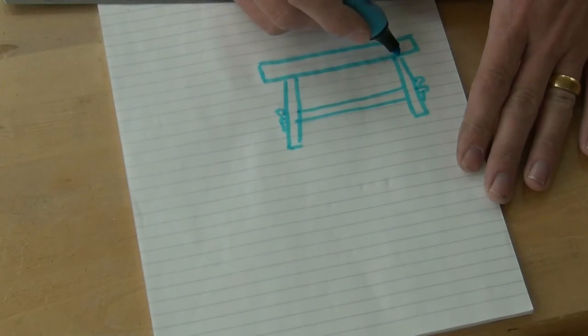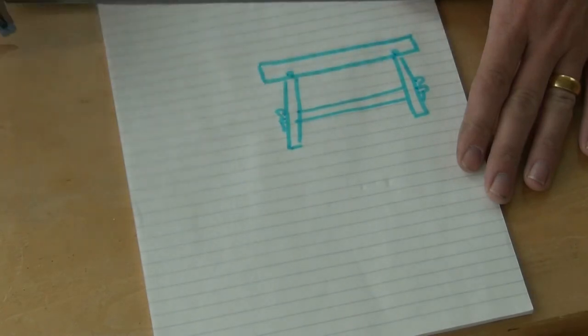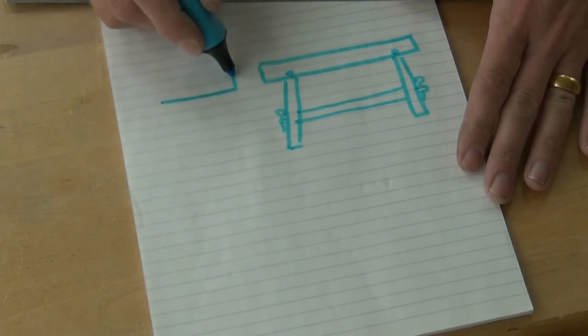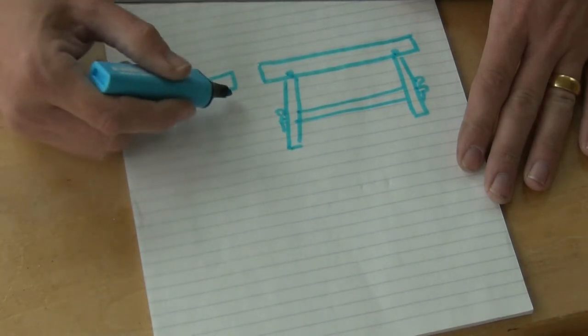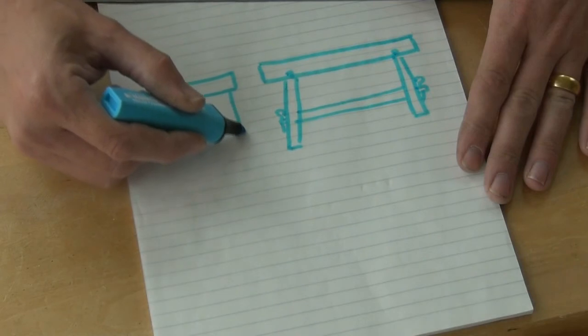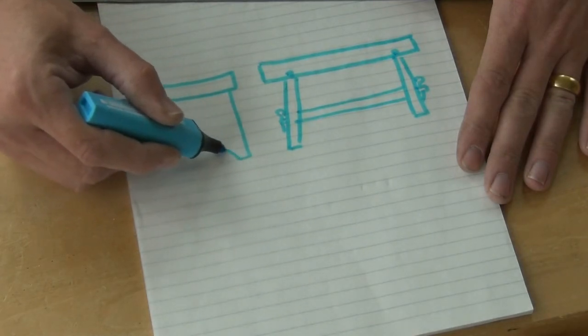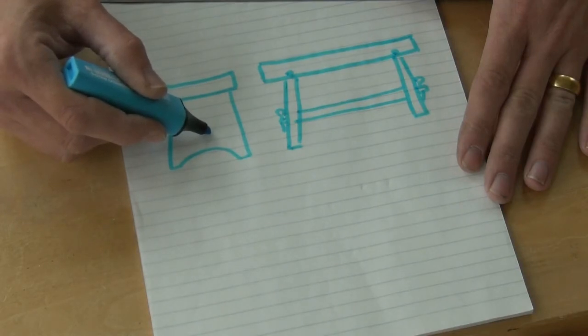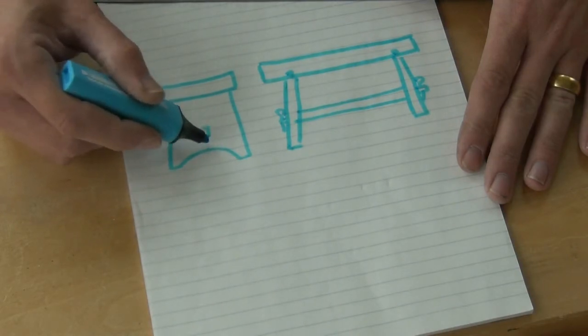And we'll connect the legs to the seat with tenons. So looking from the side, the seat, the legs, the stretcher coming through, and the wedge.